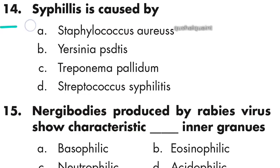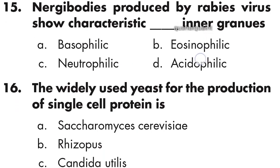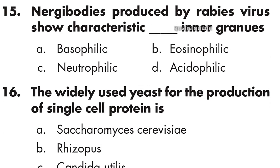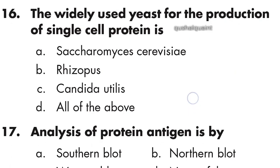Question 14: Syphilis is caused by Treponema pallidum, option C is right. Question 15: Negri bodies produced by rabies virus show characteristic basophilic inner granules, option B is right.